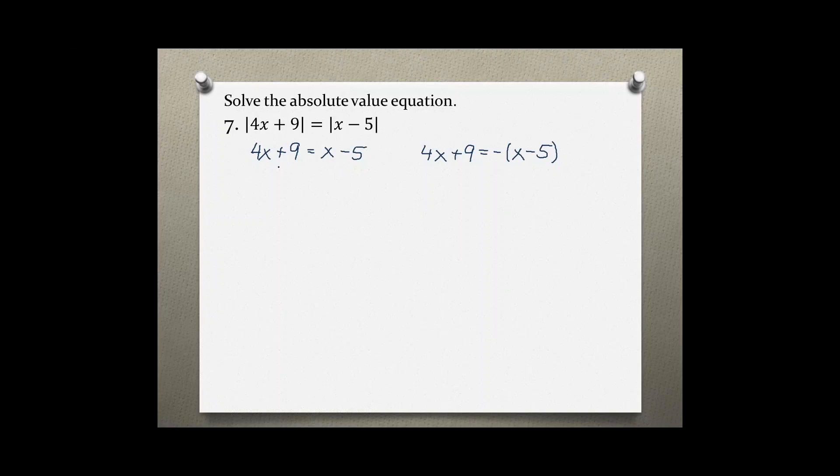So subtracting x from both sides, which gives us 3x plus 9 equals negative 5.